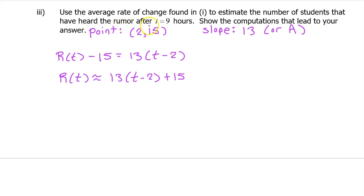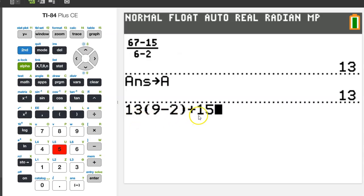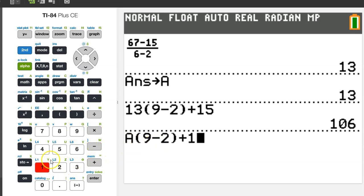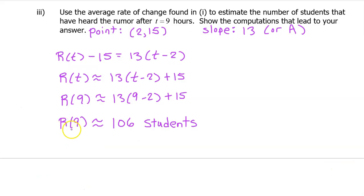We need to estimate the number of students who have heard the rumor after t equals 9 hours. So, we need to find the value of r at 9. r at 9 will be approximately equal to 13 times 9 minus 2 plus 15. These numbers are so simple that we don't need a calculator, but I'm going to use the calculator anyway because usually the numbers will be larger or involve decimals. If the average rate of change had been some long decimal, this is where we would use the letter where we stored the value of that decimal. So instead of typing 13, we could have typed alpha A and then the rest of it, times 9 minus 2—obviously you could just put 7—plus 15. And you'll get the same answer. The number of students who have heard the rumor at t equals 9 hours is approximately 106 students.